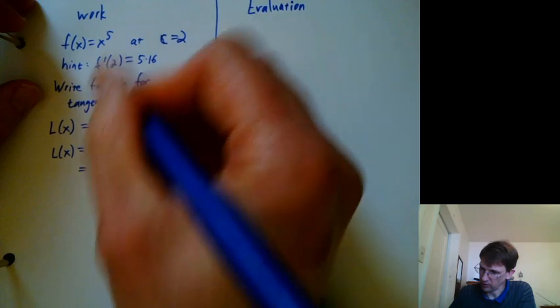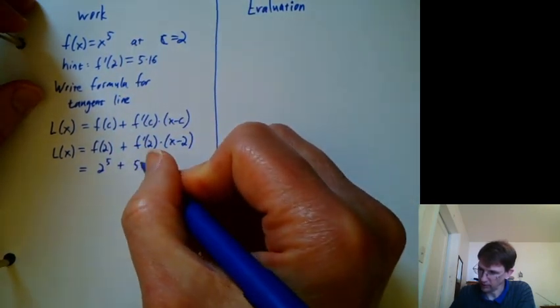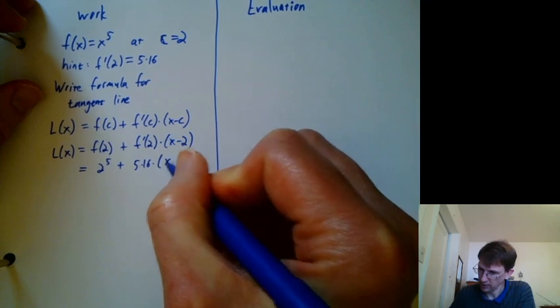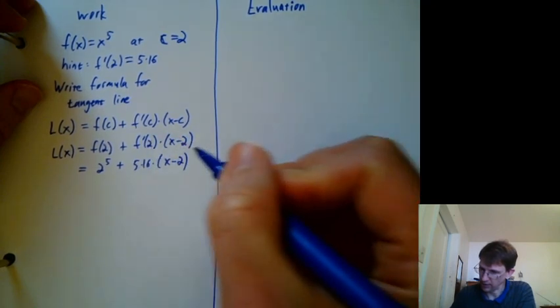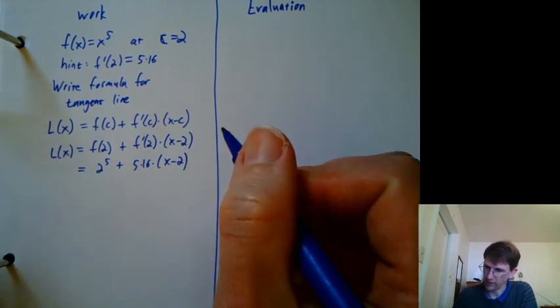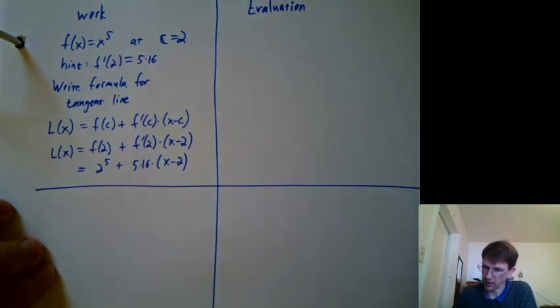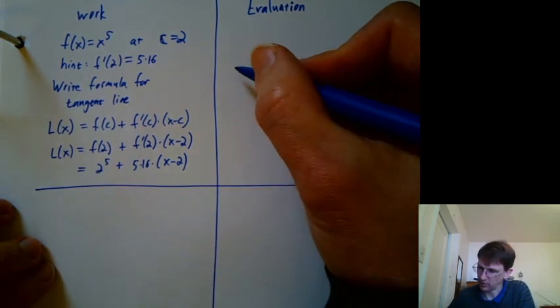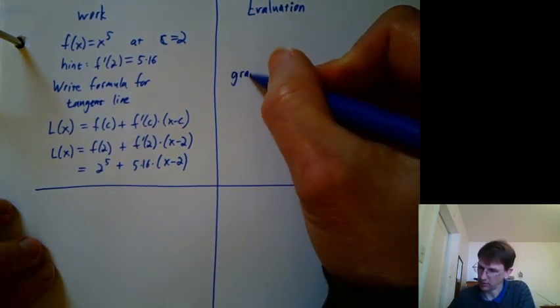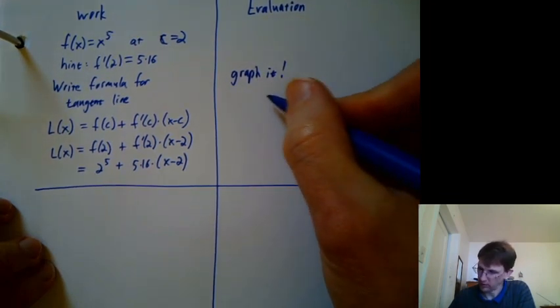And f of 2 would be 2 to the 5th. f prime at 2 is 5 times 16. And I'm not plugging anything else. So that's my tangent line formula right there. I seem to be done, but how do I know that's right? Especially if the answer isn't in the back of the book. Well, it's a good idea to graph it.